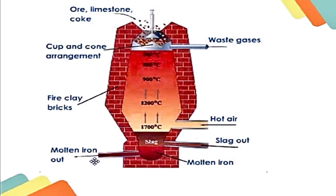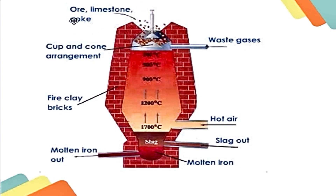Slag is here and molten iron comes out from the pipeline at the bottom. Waste gases come out from the top. The ore is Fe2O3, limestone is calcium carbonate, and coke is C. These are the three materials put into the blast furnace.